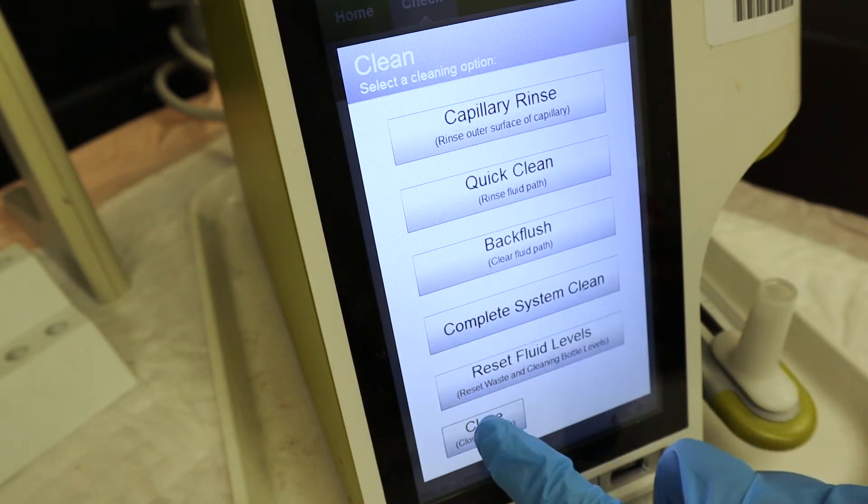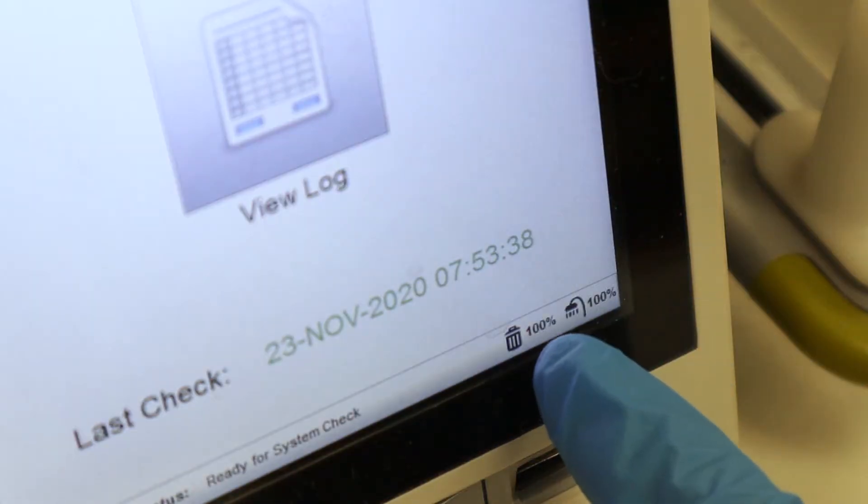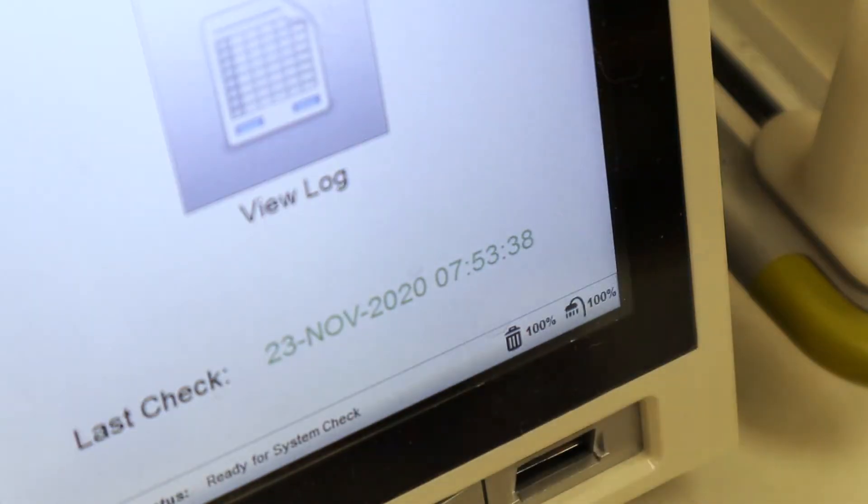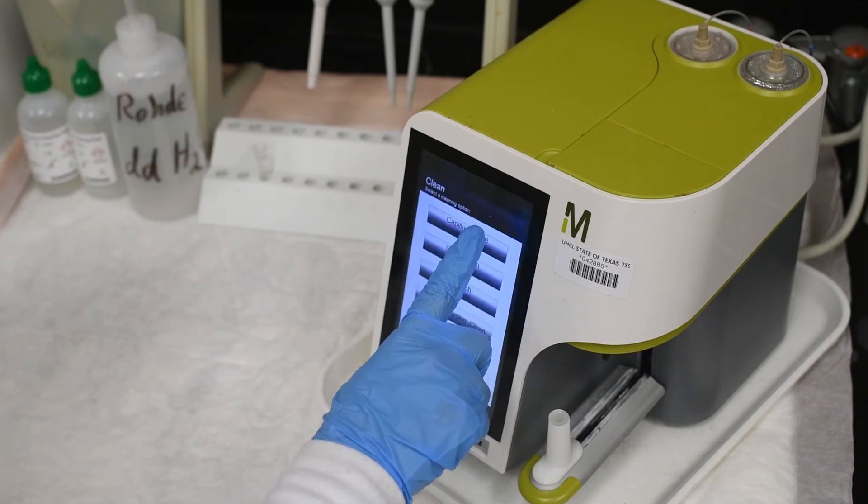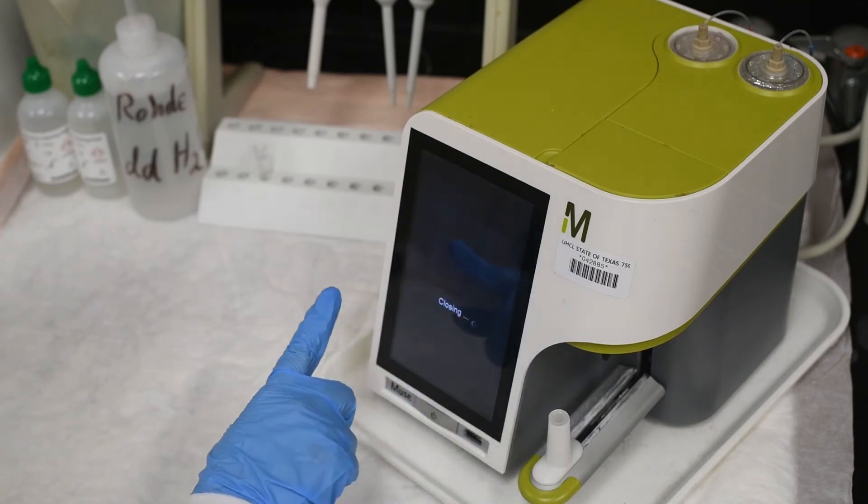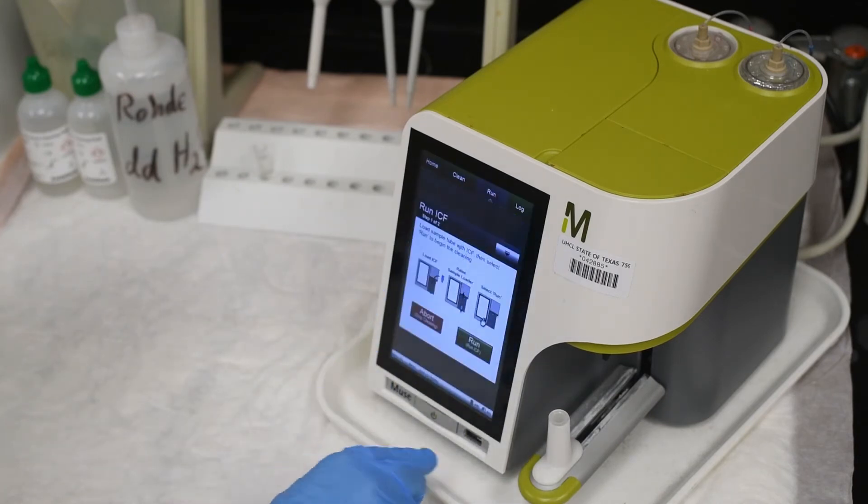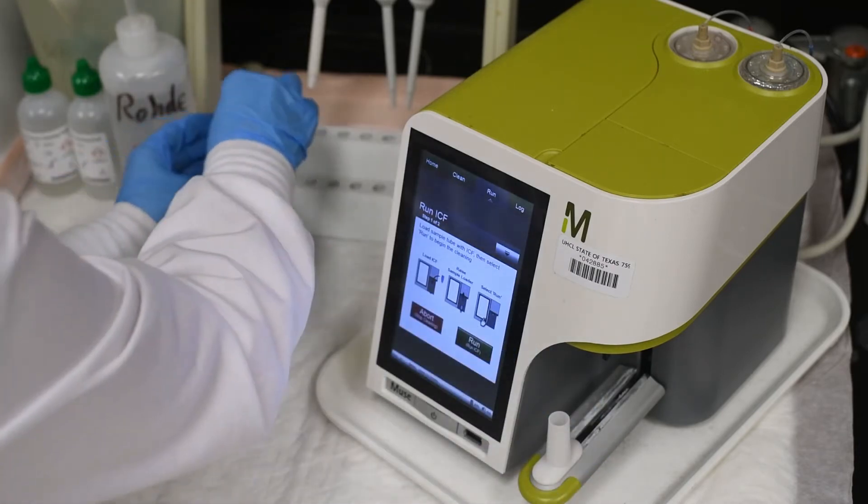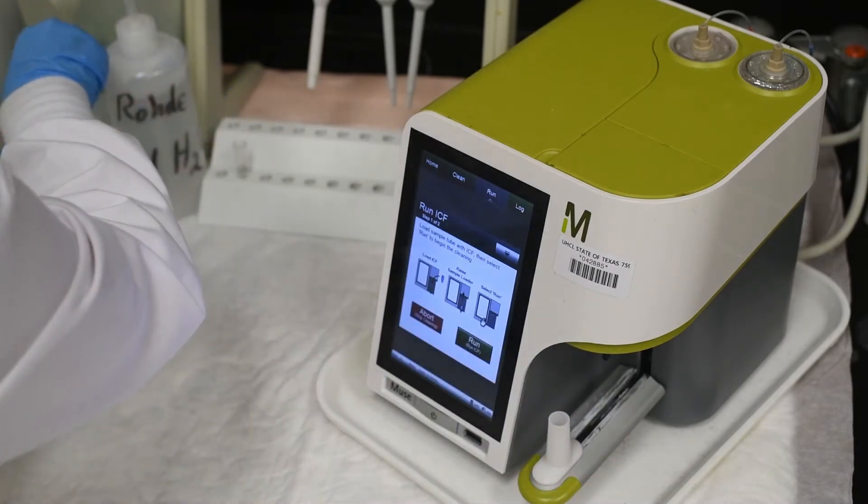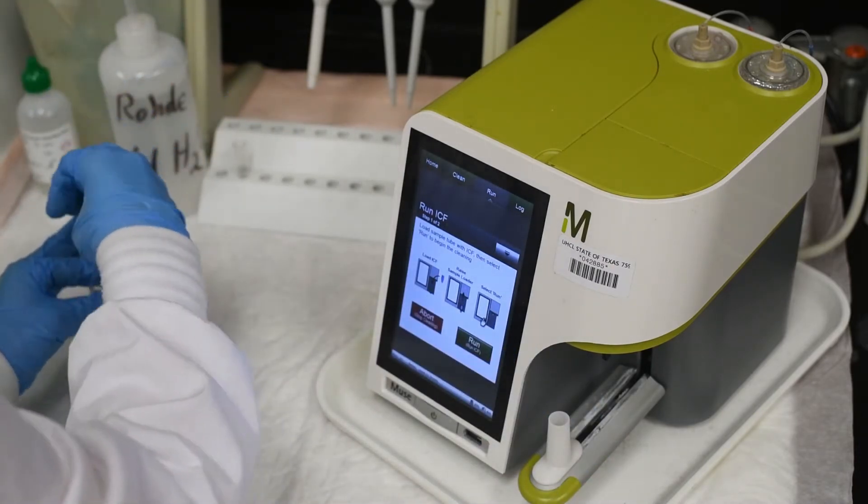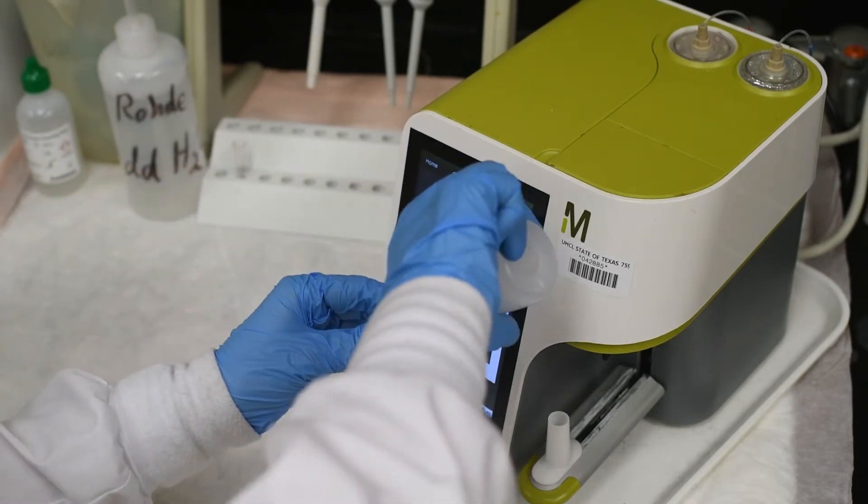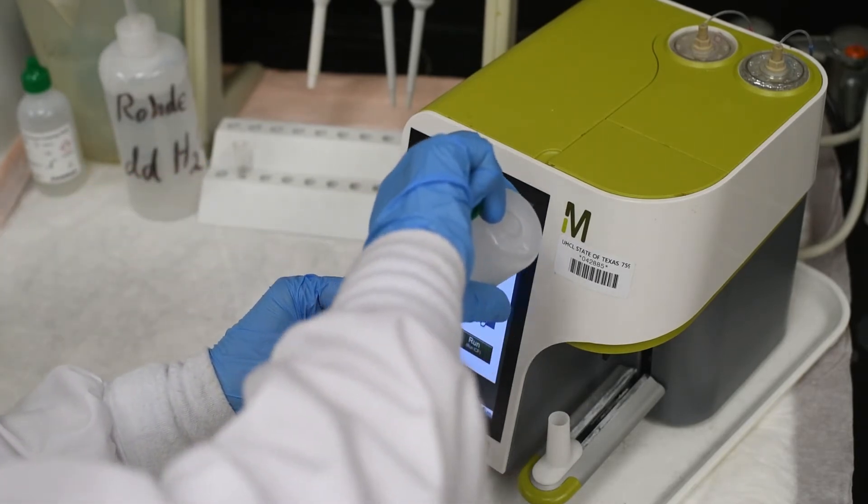The fluid levels should both read at 100% now. After resetting the fluid levels, a complete system clean will need to be performed. It is good practice to run one of these each time the Muse analyzer has been turned on.